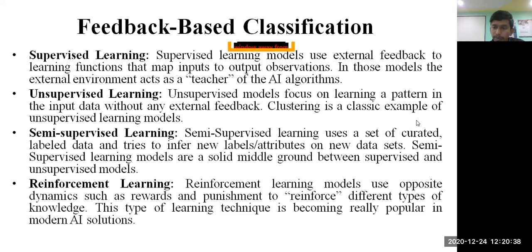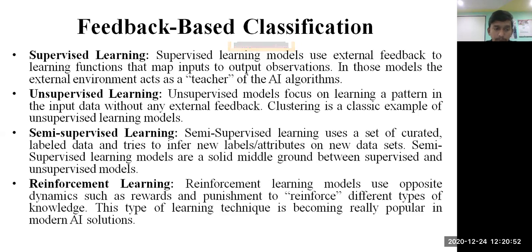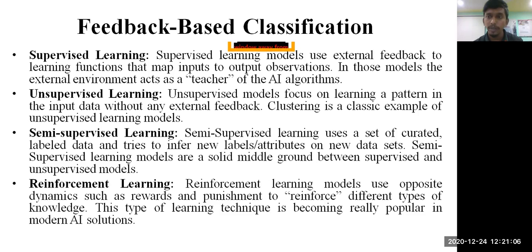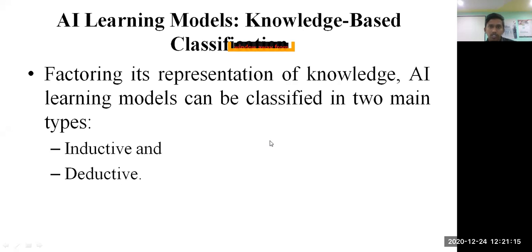Reinforcement learning uses opposite dynamics such as rewards and punishment to reinforce different types of knowledge. Artificial intelligence systems come under reinforcement learning because a decision needs to be made from domain expert knowledge or expert system knowledge. This type of learning technique is becoming really popular in modern AI solutions, and basically any AI approach or learning model is treated as a reinforcement learning model.